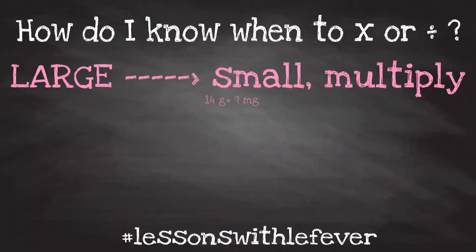Let's say we have 14 grams and we wanted to convert that into milligrams. The first thing I need to know is that a gram is larger than a milligram. So I'm going from a large unit to a small unit, which means I'm going to be multiplying. In one gram there are 1,000 milligrams. So 14 times 1,000 equals 14,000 milligrams.